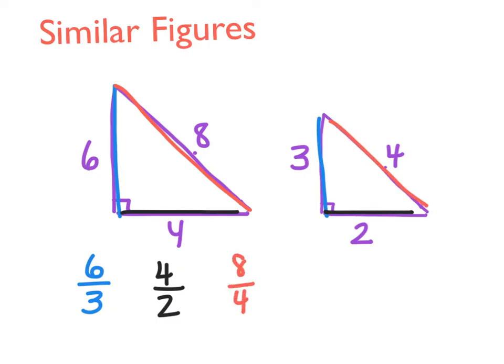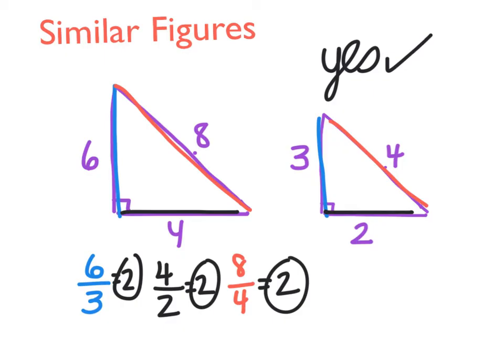Now, if you divide all of those out, 6 divided by 3 is 2. 4 divided by 2 is 2. 8 divided by 4 is 2. They all have the same ratio of sides. They're all equal. So I know that these are similar. So I could say, yes, these are similar. Their side lengths are proportional.